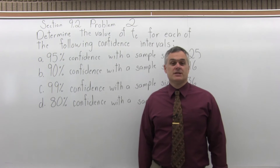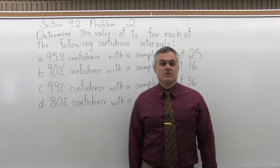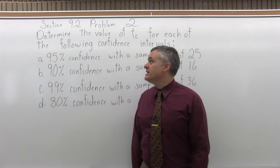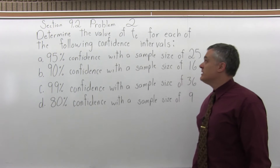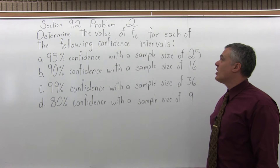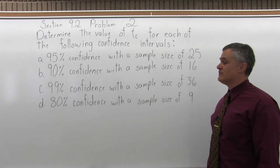This is Section 9.2, Problem 2. It says: determine the value of T sub C, the confidence coefficient, for each of the following confidence intervals.